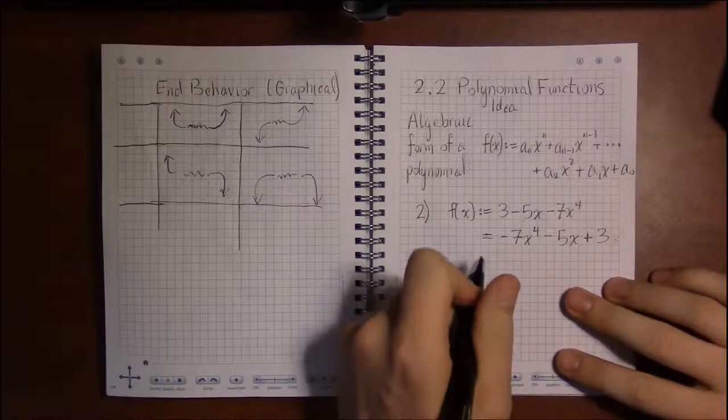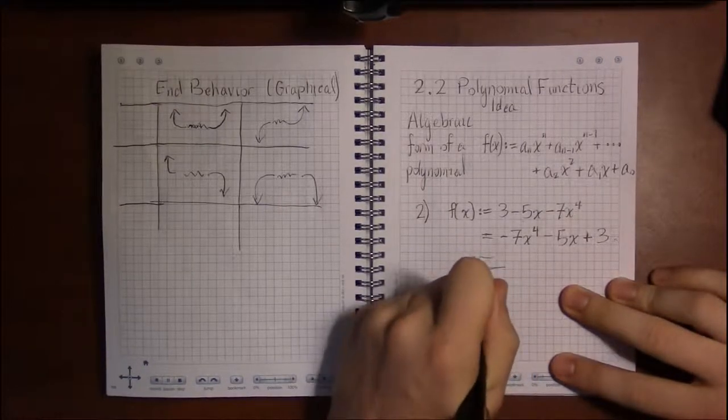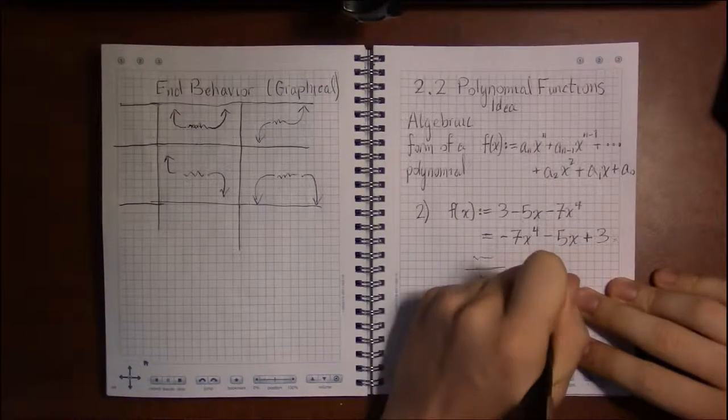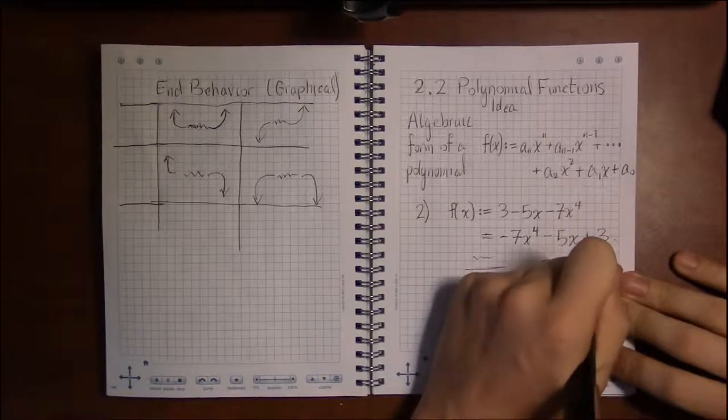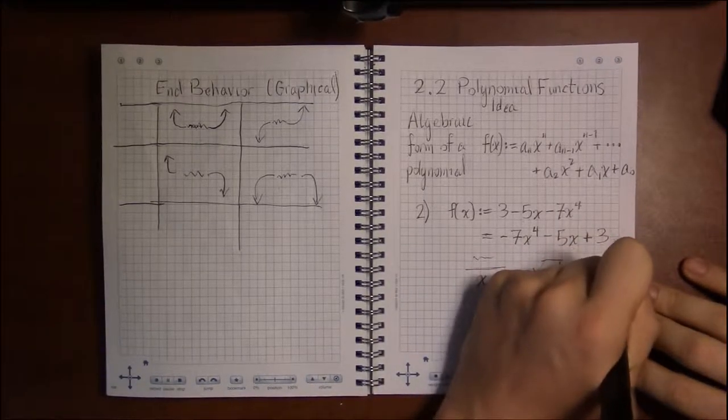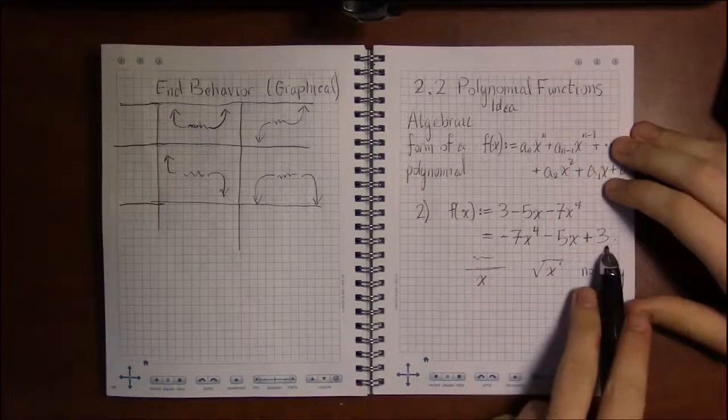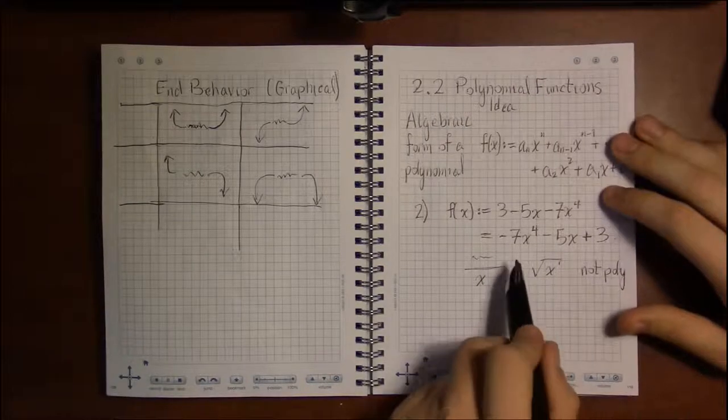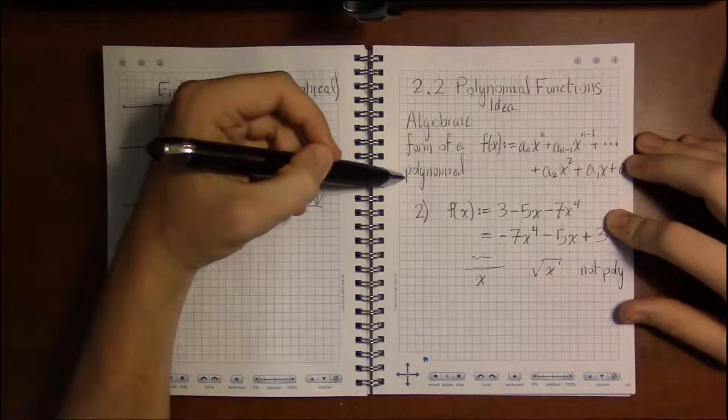Things that aren't polynomials are things that have x's in denominators or x's underneath square roots. These are not polynomials. Polynomials have to look something like this.